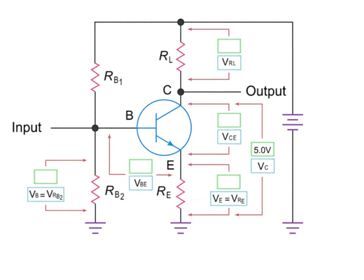Now let's take this same amplifier circuit and estimate what the voltage drops would be given a supply voltage, VCC, of 10 volts and a voltage drop of 1.8 volts across the VRB2 resistor.